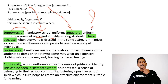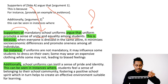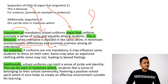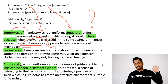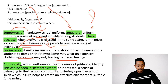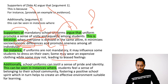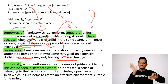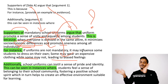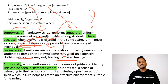'This is because when everyone is dressed in the same attire, it minimizes socioeconomic differences and promotes oneness among individuals.' Then the example: 'For example, if uniforms are not mandatory, it may influence some students to dress on their own — some may wear expensive clothing while some may not — leading to biased feelings.' Reverse psychology helps: if you can't think of a reason, prove what happens without it.